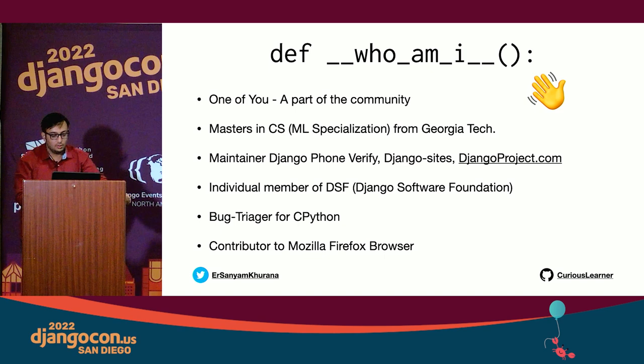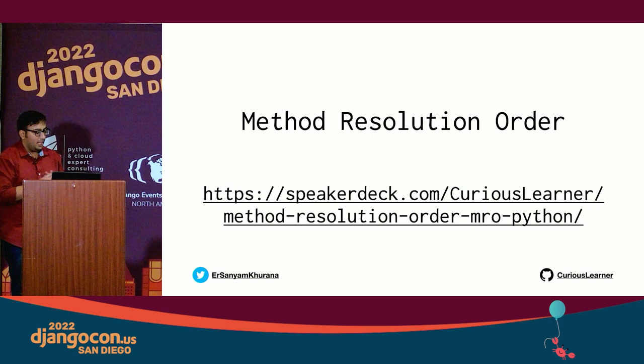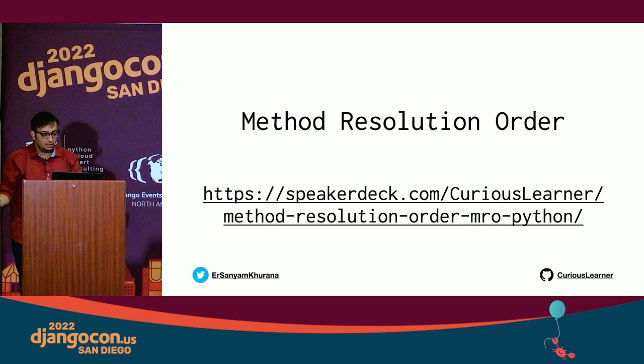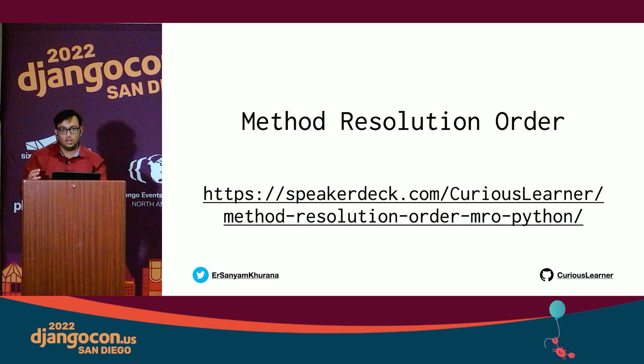So let's talk about method resolution order. Imagine implementing inheritance in a programming language. At first, it looks like all the methods and attributes inside your class will be inherited in all your child classes. While it works for the majority of scenarios, things become a little bit different when we hit the case of multiple inheritance, and deciding which particular method or attribute will take precedence becomes a daunting task.